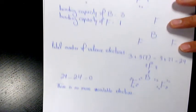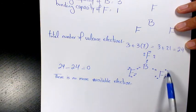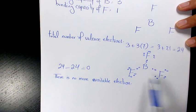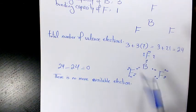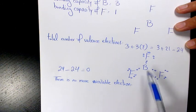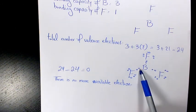Now what I need to do is check the octet rule. If you see here for fluorine, we have two, four, six, eight—that has an octet. Each fluorine has an octet. However, for boron we have only six electrons. Here we have an exception.